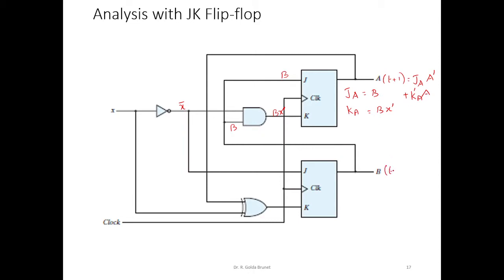Similarly, we can write B of t plus 1 as JB·B̄ + K̄B·B. The input equation for JB is X bar, and KB is the XOR of A and X.